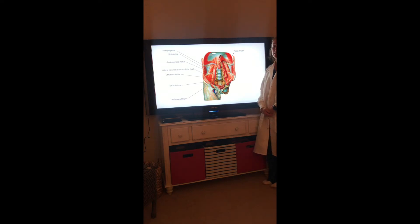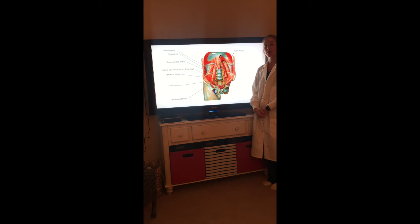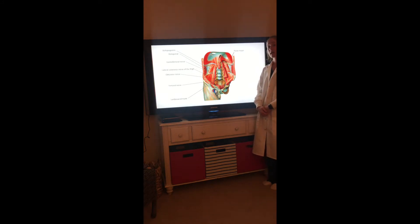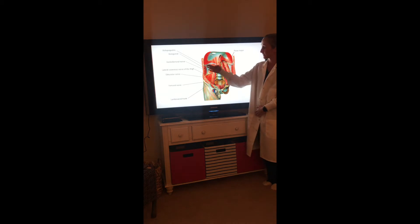The lumbar nerve plexus is located posterior to the psoas major and is anterior to the lumbar transverse processes. It is composed of the anterior rami of L1 to L4 and has many different branches shown here.